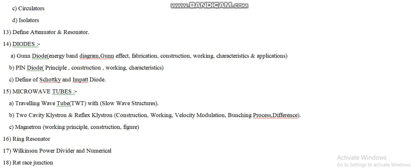Moving on to the next question, that is microwave tubes. There are four types of microwave tubes. According to part A, the Traveling Wave Tube, abbreviated as TWT: the examiner can ask for the description of the TWT on the basis of slow wave structure. Read it carefully — specifically on the basis of slow wave structures.